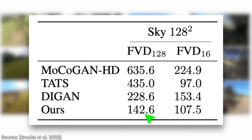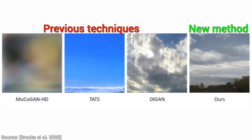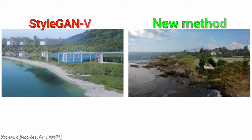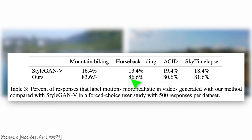But there is another way of measuring which is even better, and more importantly, by how much. That is showing these videos to humans and asking them. In the user study, 500 people were asked which is more realistic, and about 80 to 85% of the people chose the new technique over StyleGAN-V, the previous one.